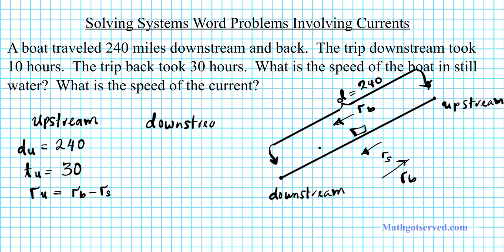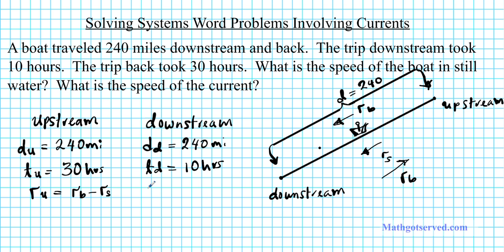How about downstream? Going downstream, the distance downstream dd is also 240 miles. The time downstream td — when you're going downstream with the boat, the current causes the boat to travel faster, so that's why it's down to 10 hours. The rate downstream is going to be the rate of the boat plus the rate of the stream, since the current is going with the boat. But going upstream you subtract because you're going in different directions.